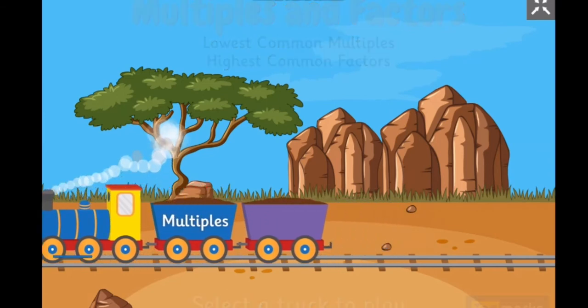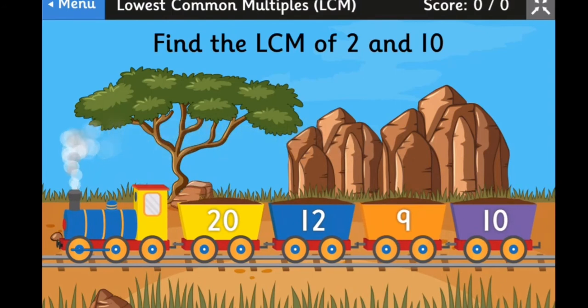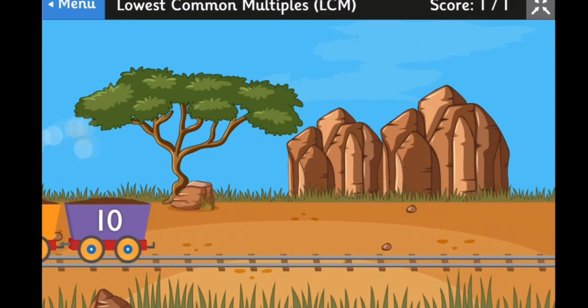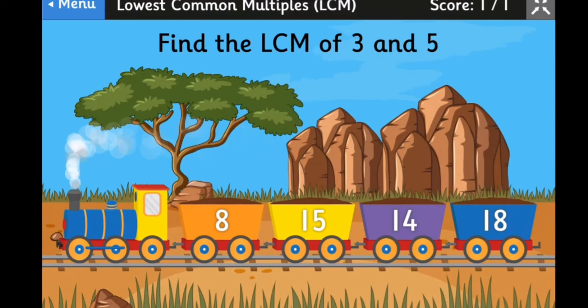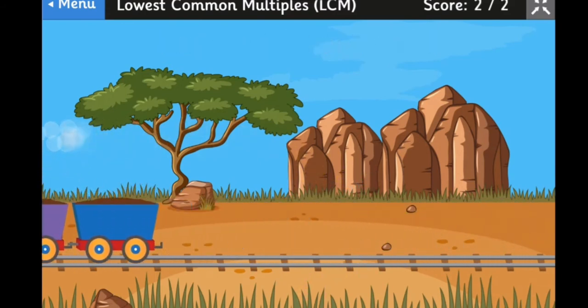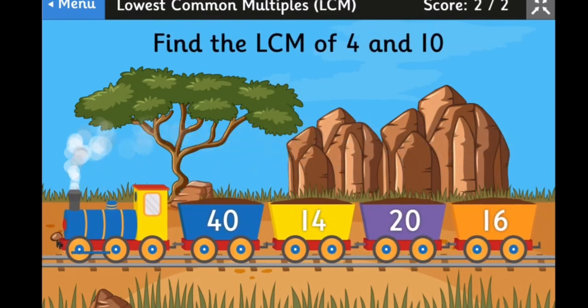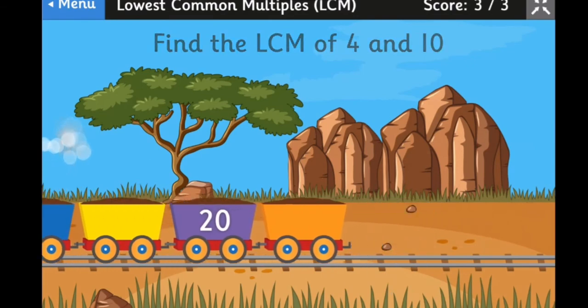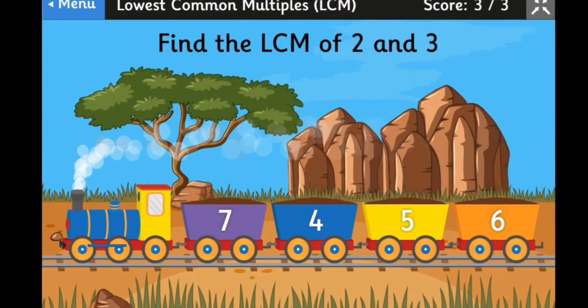It says here find the LCM of 2 and 10, and that is just 10. Got it right. It says find the LCM of 3 and 5, and that is 15. Got that right too. It says here find the LCM of 4 and 10, and that is 20. Good.